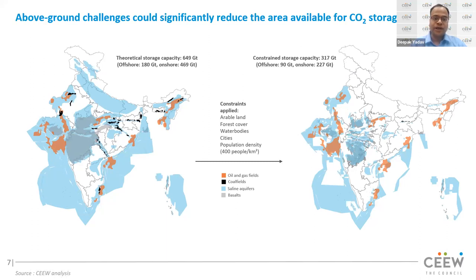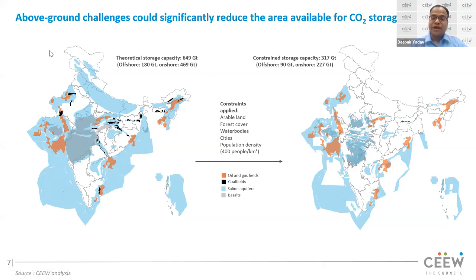Of 649 gigatons theoretical potential, about 180 gigatons is offshore and about 469 gigatons is onshore. If we apply various filters — arable land, forest cover, water bodies — and consider a cutoff population density of 400 people per square kilometer, implying it is not possible to sequester CO2 in districts with population density higher than 400 per square kilometer, then we arrive at a constrained CO2 sequestration potential of about 317 gigatons, of which about 90 gigatons is offshore and 227 gigatons is onshore.